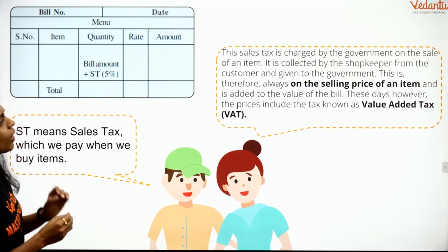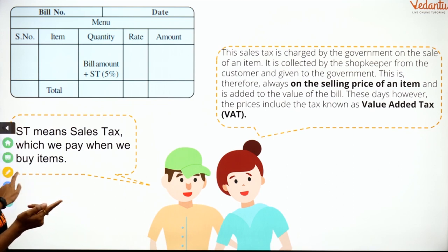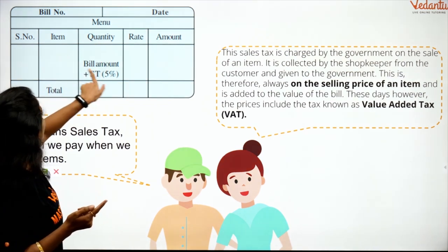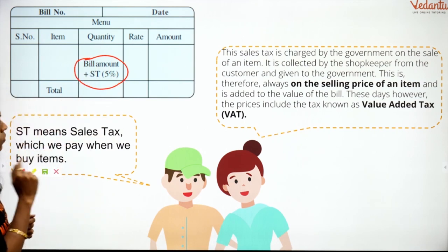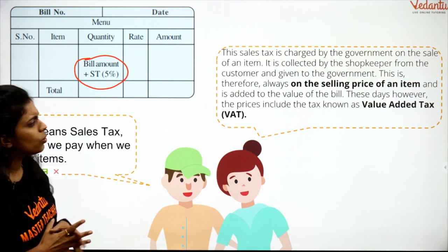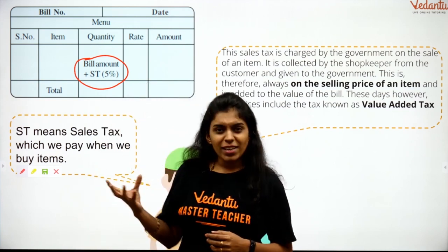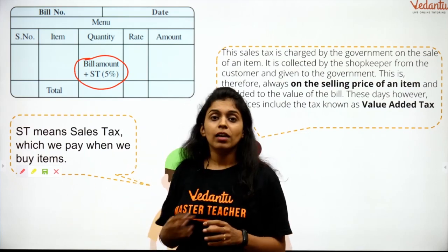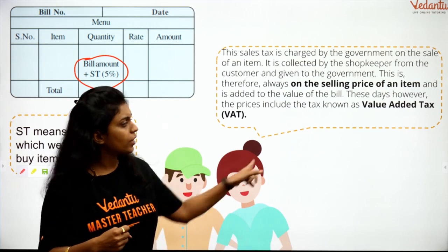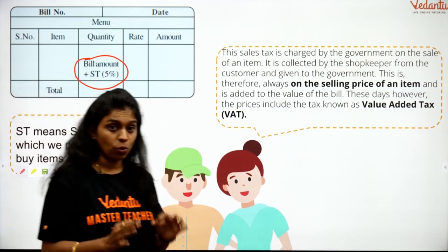Tax is charged by the government on the sale of an item. It is collected by the shopkeeper from the customer and given to the government — that is where you see the tax in the bill amount. Tax is therefore always on the selling price of an item and is added to the value of the bill. These days, however, prices include the tax, known as value-added tax.